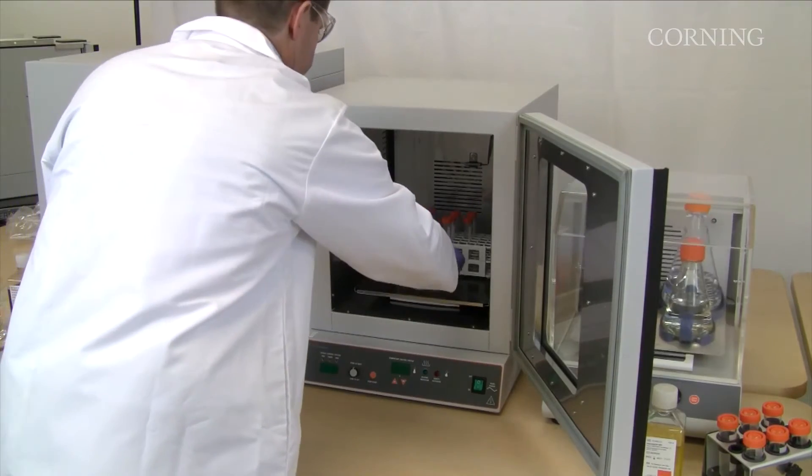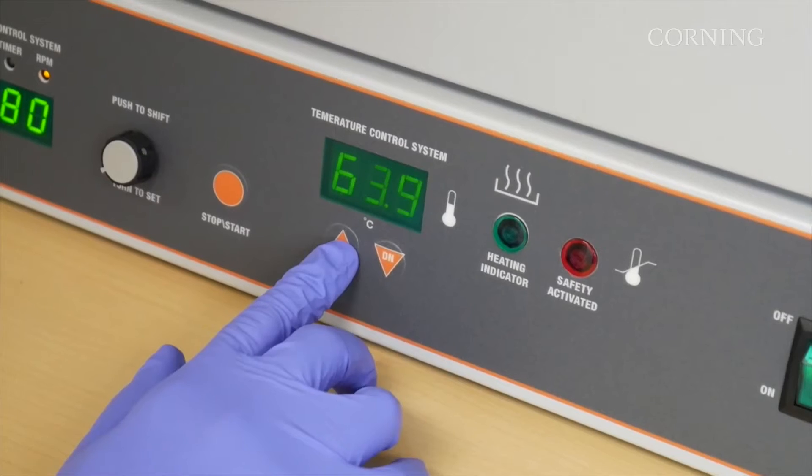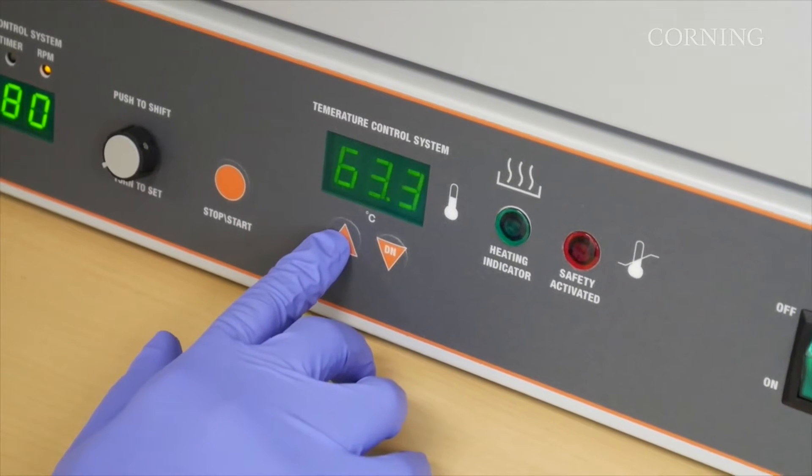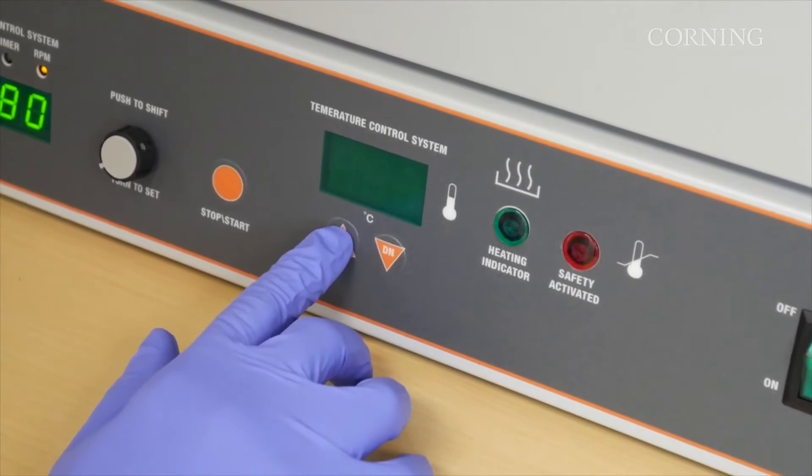the Shaking Incubators from Corning are a safe and convenient way to incubate your precious samples. The incubators have a broad temperature range, from ambient plus 5 degrees Celsius to 80 degrees Celsius.